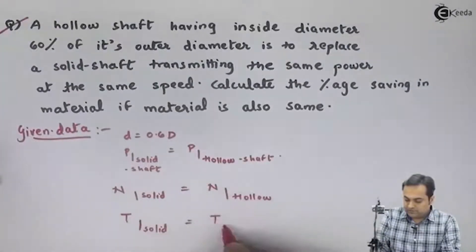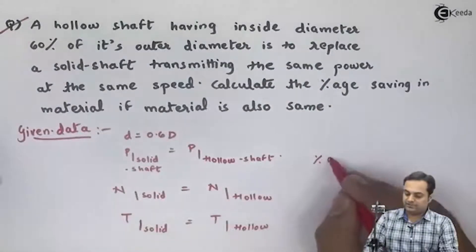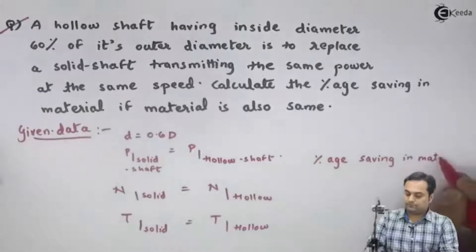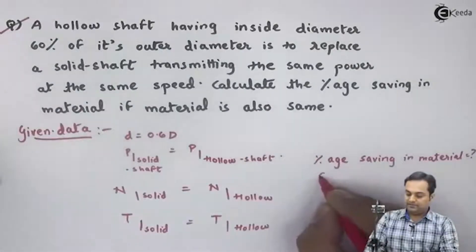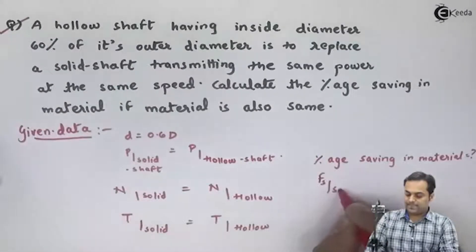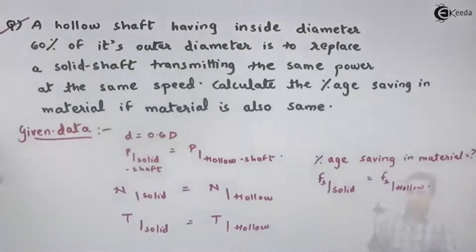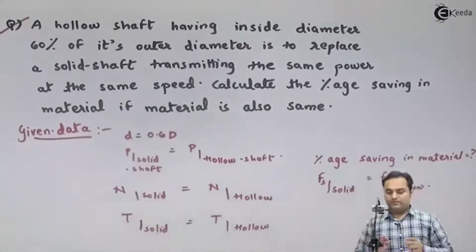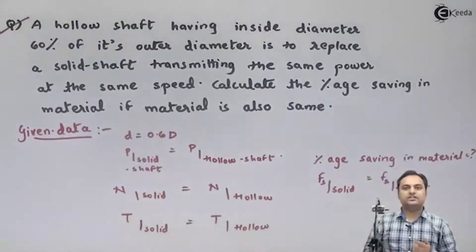Since power and speed are the same, the torque also remains the same. So torque in the solid shaft equals torque in the hollow shaft. We have to find the percentage saving in material. Since the material is the same, the shear stress value will be the same for solid as well as for hollow. This means we need to use the strength criteria.